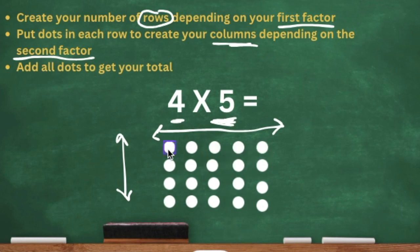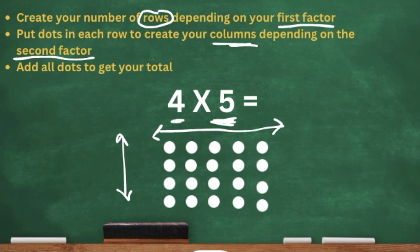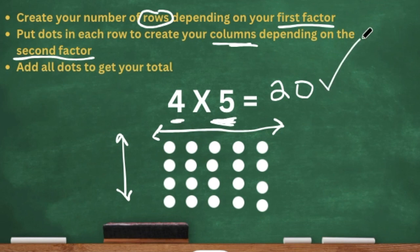So now we have four rows with five dots in each. Counting all the dots: one, two, three, four, five, six, seven, eight, nine, ten, eleven, twelve, thirteen, fourteen, fifteen, sixteen, seventeen, eighteen, nineteen, twenty. We have 20 altogether. That's how I know four times five is 20.